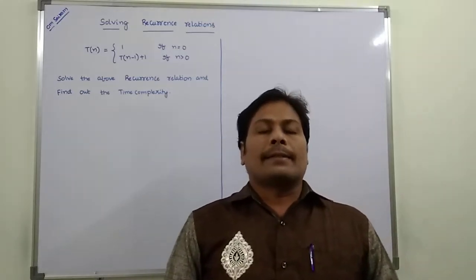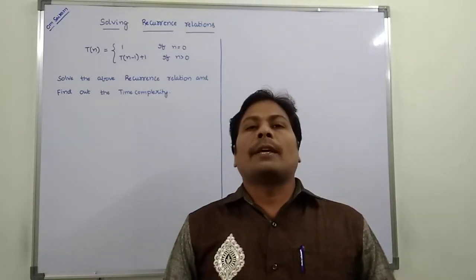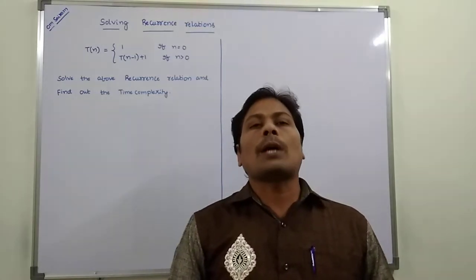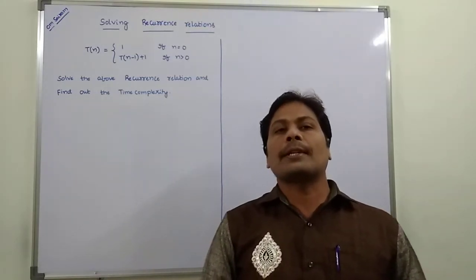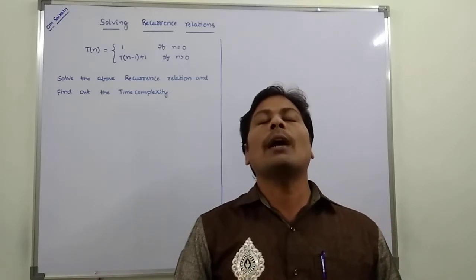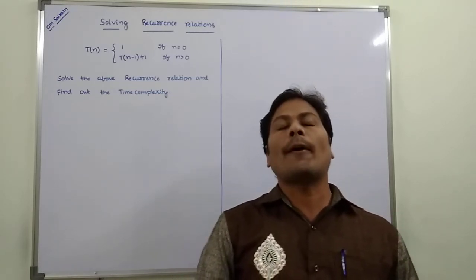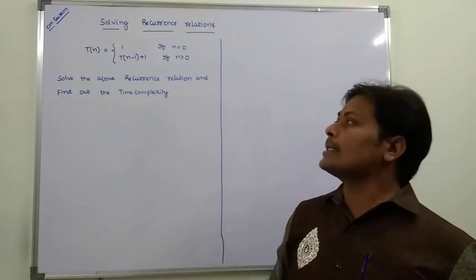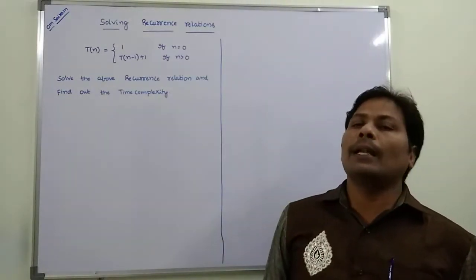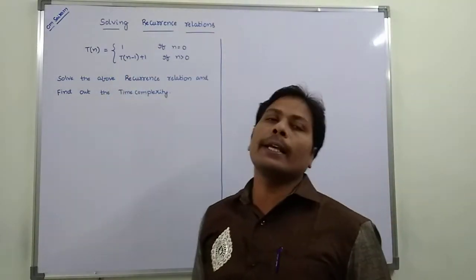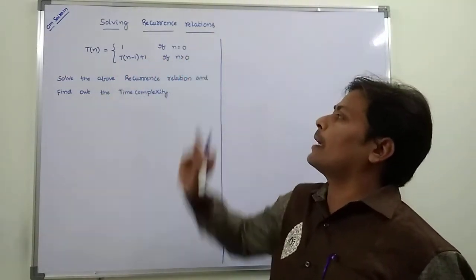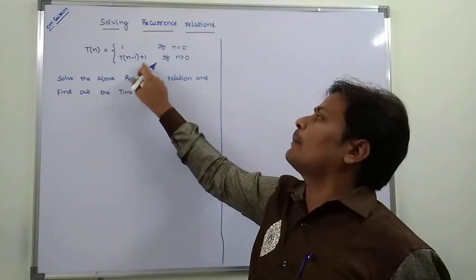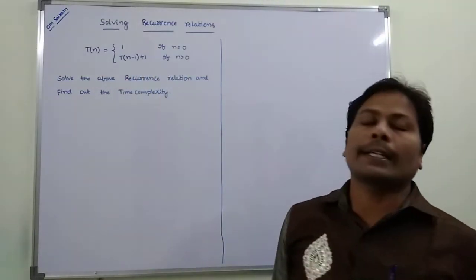Hi friends, today I am giving a lecture on how to solve recurrence relations and find out the time complexity of the recurrence relation. Now consider this example: T(n) = 1 if n = 0, and T(n) = T(n-1) + 1 if n > 0.